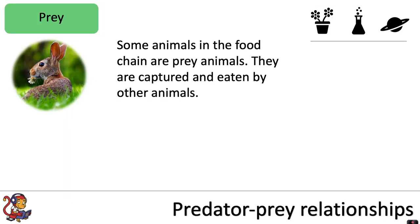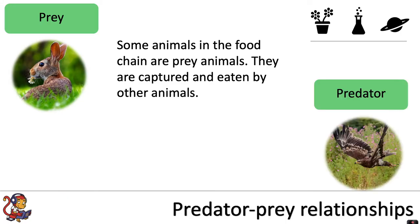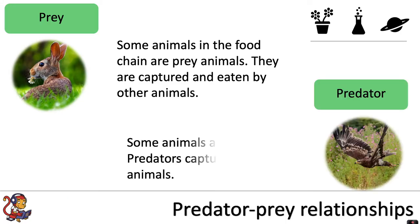Some animals in the food chain are prey animals. They are captured and eaten by other animals. Some animals are predators. Predators capture and eat other animals.